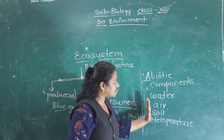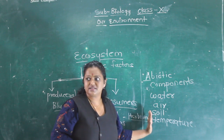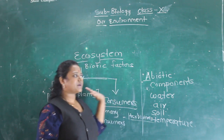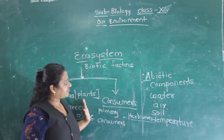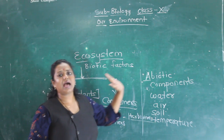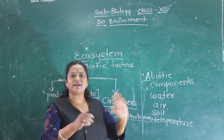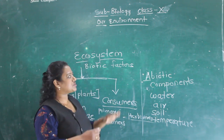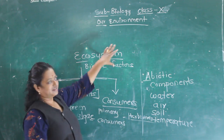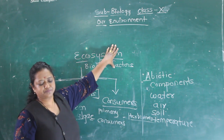So these are some abiotic factors and some biotic factors. These abiotic and biotic factors are dependent on each other, and together they make the ecosystem.